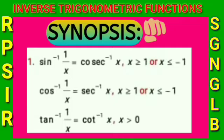First point: sin⁻¹(1/x) = cosec⁻¹(x), where x ≥ 1 or x ≤ -1. Cos⁻¹(1/x) = sec⁻¹(x), where x ≥ 1 or x ≤ -1. Tan⁻¹(1/x) = cot⁻¹(x), where x > 0.